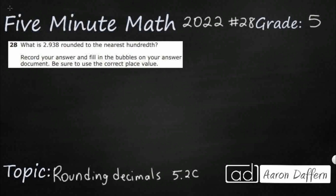Very short problem. What is 2.938, or 2 and 938 thousandths, rounded to the nearest hundredth?